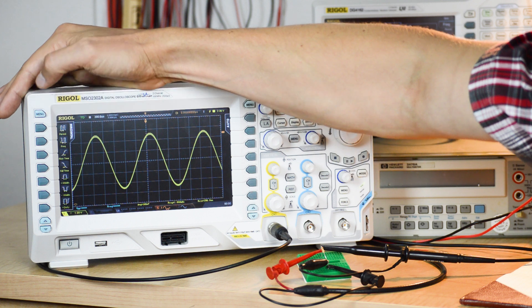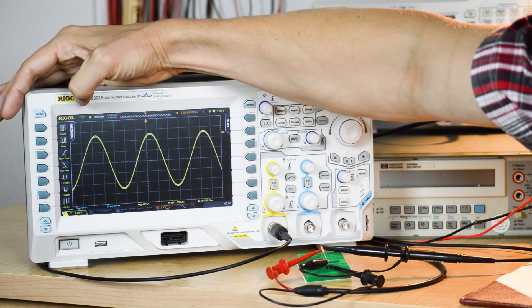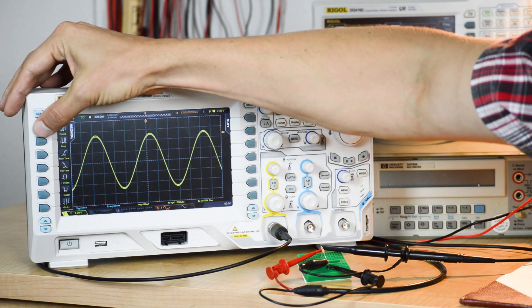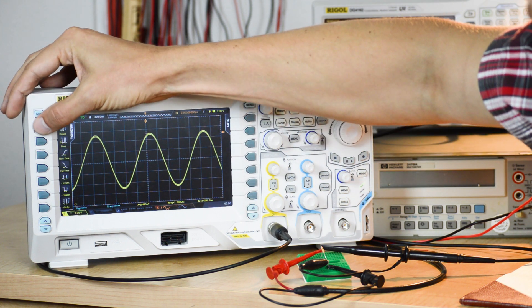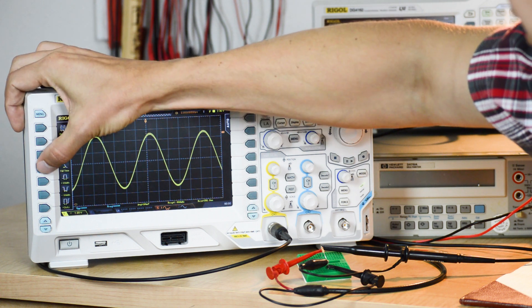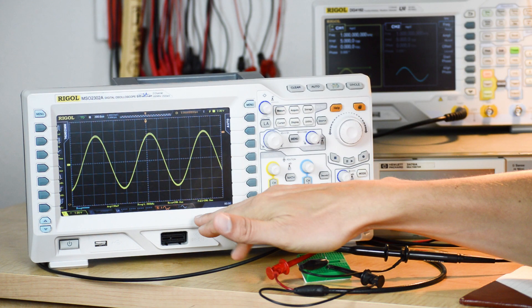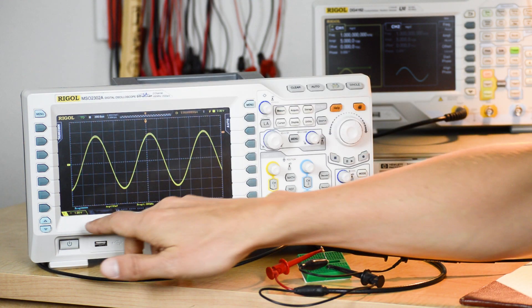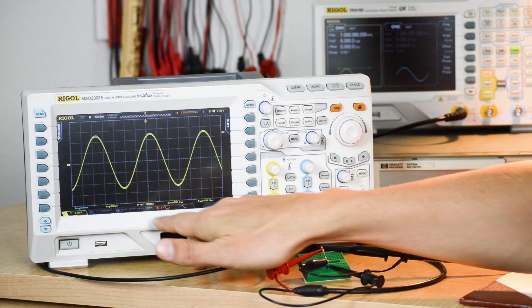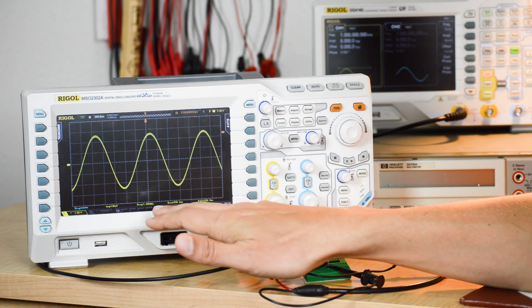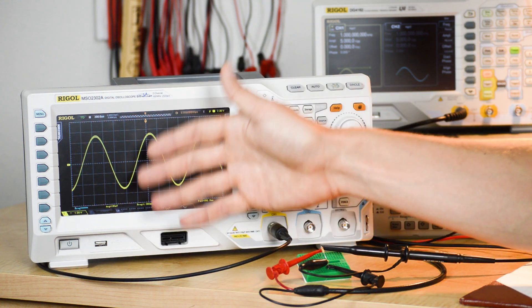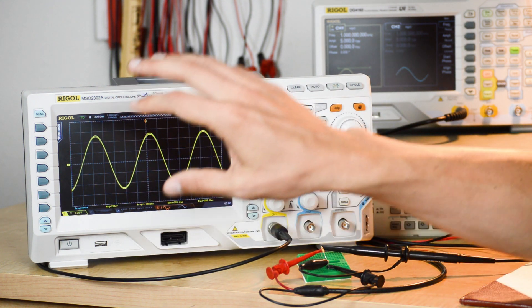You can do measurements. On this one, you push this button and it shows horizontal measurements—period, frequency, rise time, fall time, pulse width, things like that. Let's look at fall time. It says 286 microseconds. You can also see the frequency is one kilohertz, and the rise time is almost the same as the fall time. Your average shows a little bit of a voltage offset.